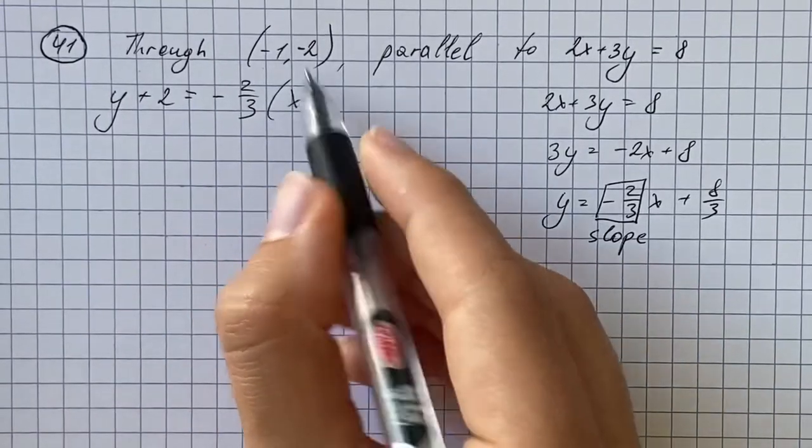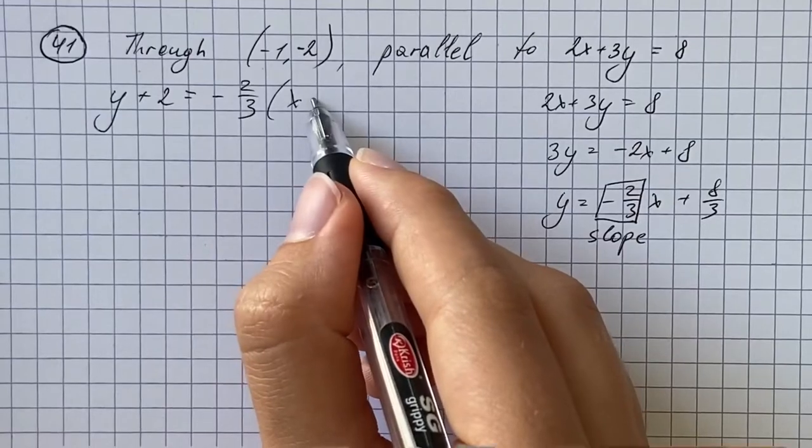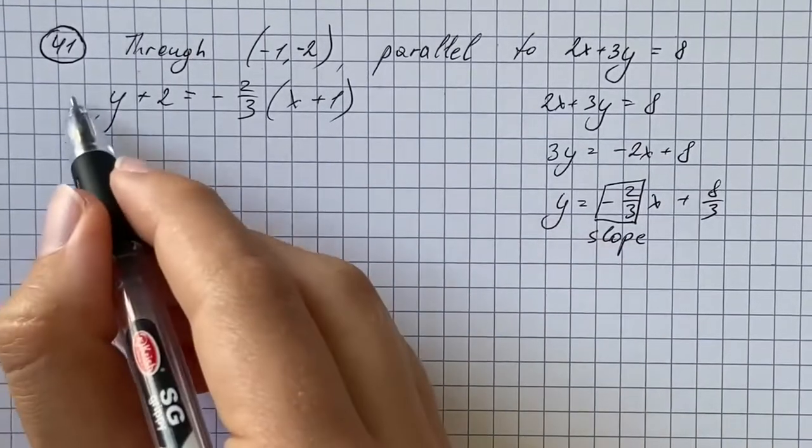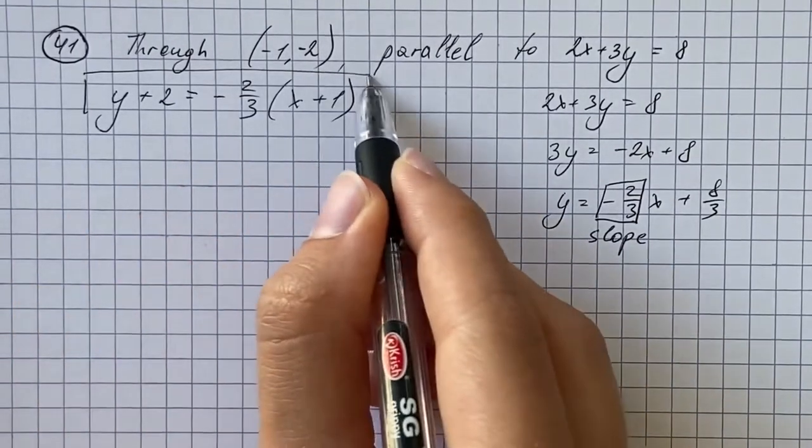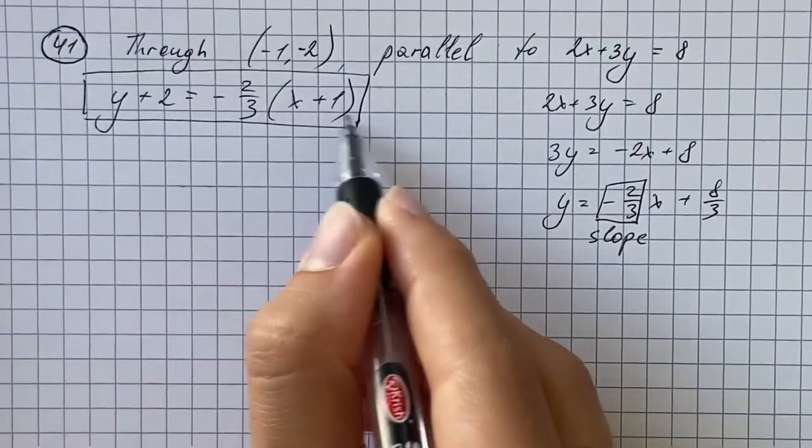Times x minus the x coordinate, so that's going to be plus 1. And that's our equation.